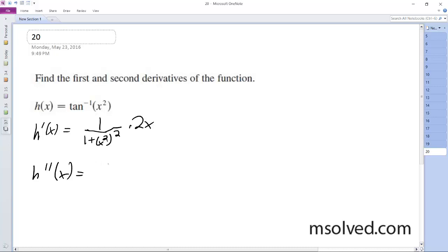So we have, initially we have 2x over 1 plus x squared to the second.